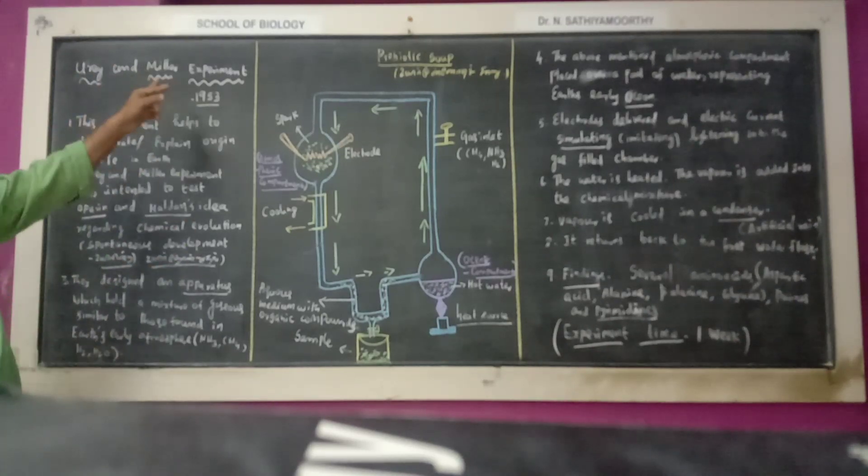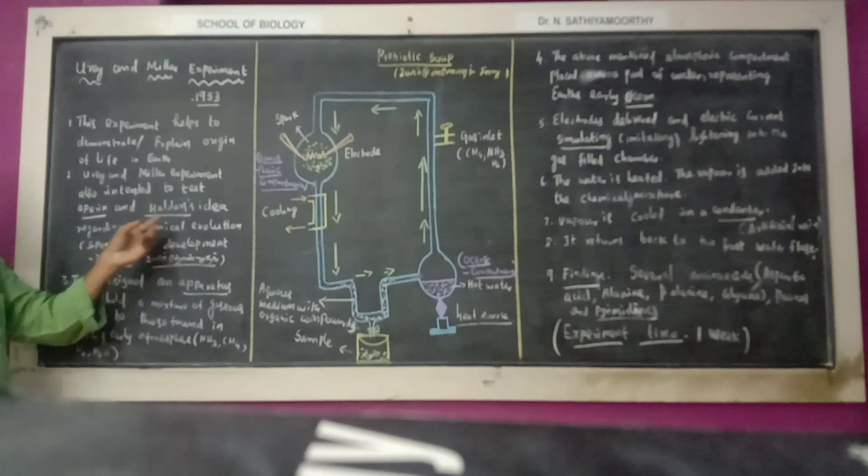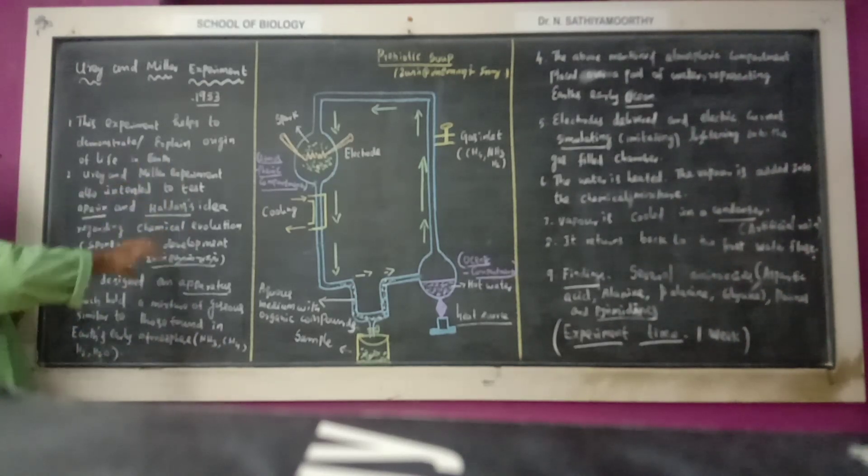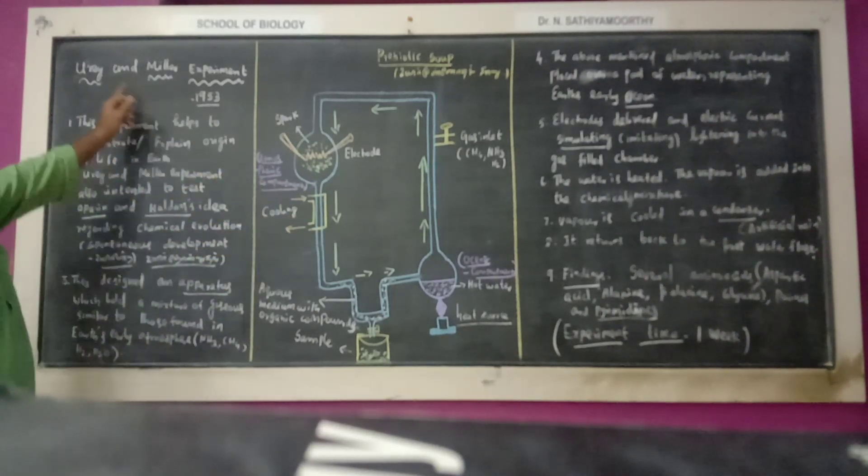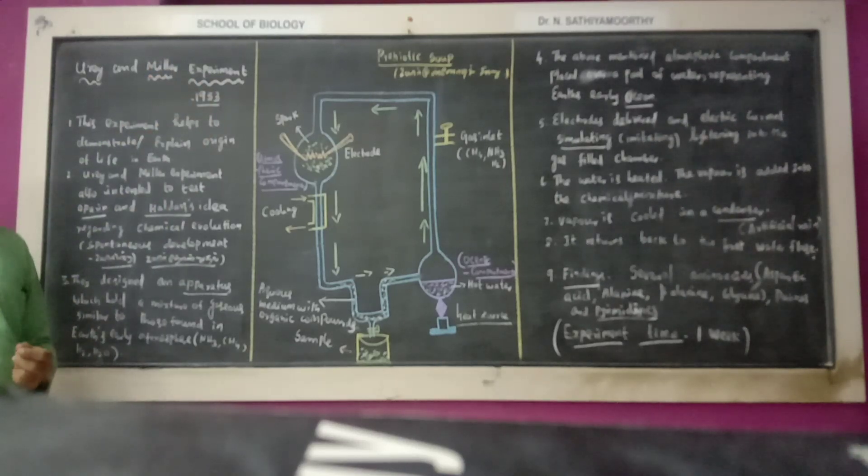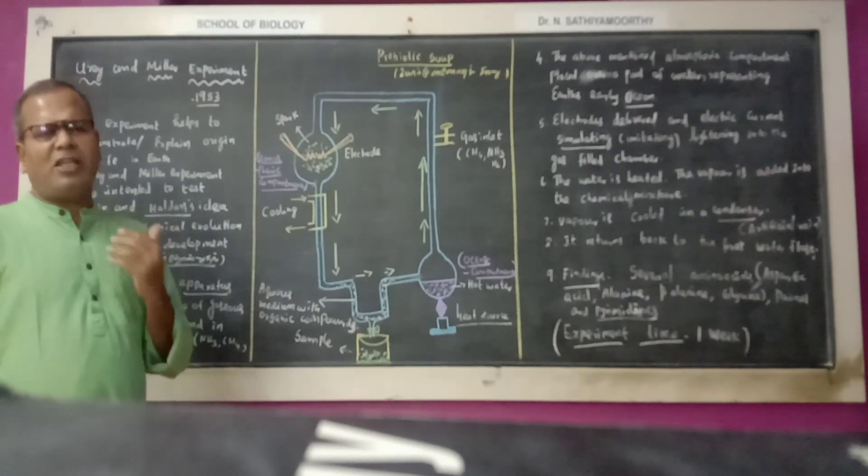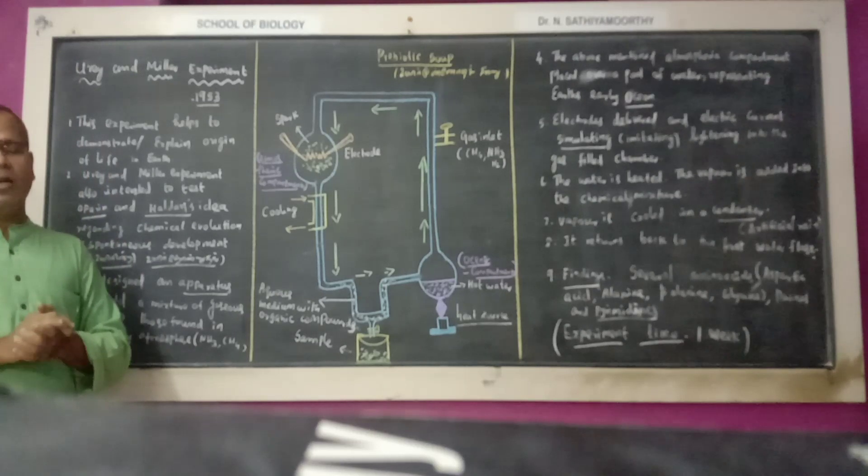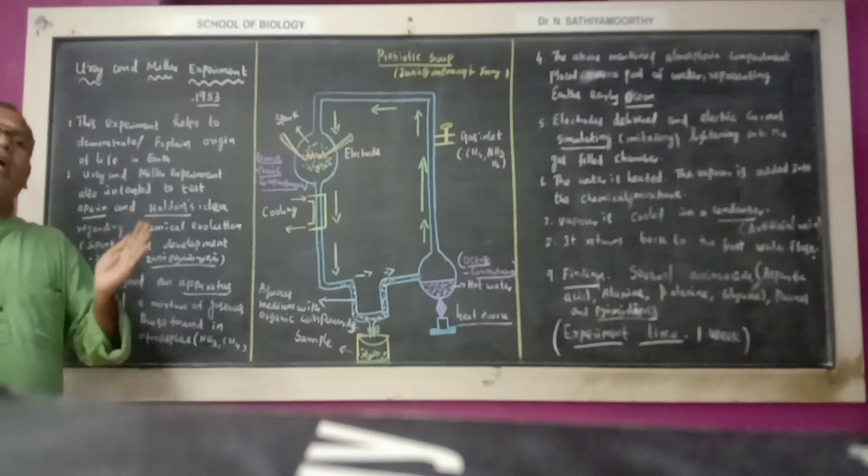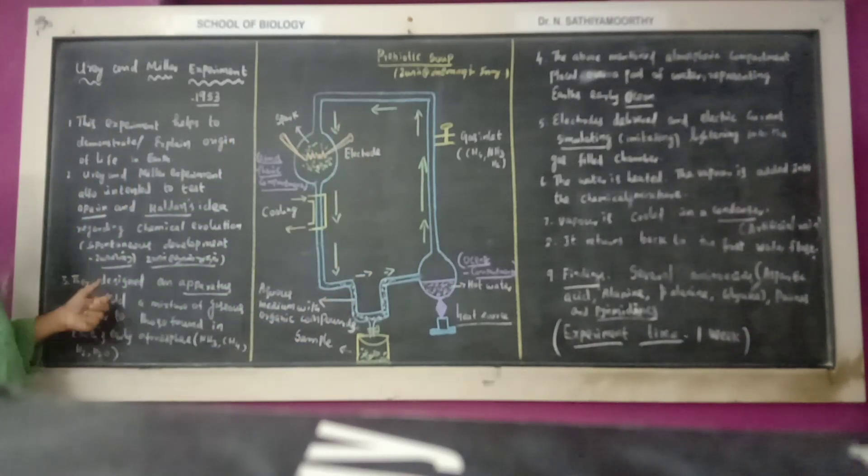These two scientists want to prove the concept of Oparin and Haldane through the Urey-Miller experiment. First, they created the initial stages of Earth in the lab using an instrument that resembled the primitive Earth.